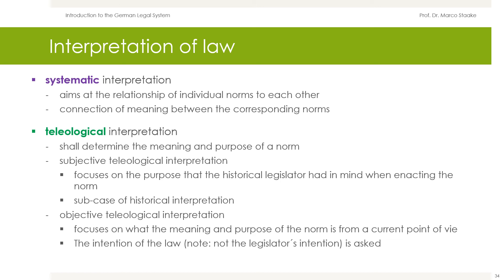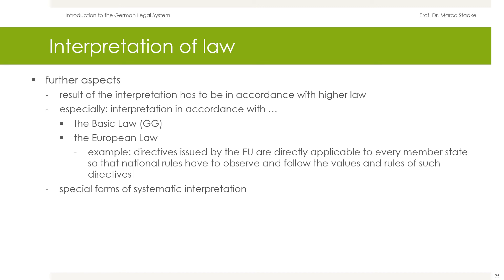There are other aspects of the interpretation of law. The most important one: the result of the interpretation has to be in accordance with the higher law — especially, the interpretation has to be in accordance with the Basic Law, the German Grundgesetz, and in accordance with European law. For example, directives issued by the European Union are directly applicable to every member state, so that national rules have to be observed and follow the values and rules of such directives. These aspects are special forms of systematic interpretation.